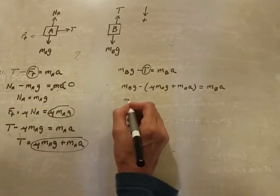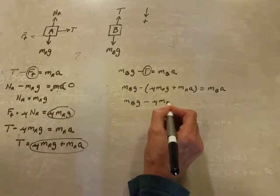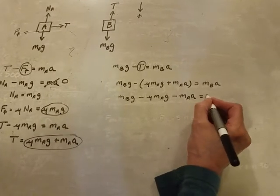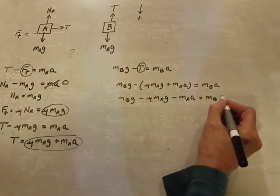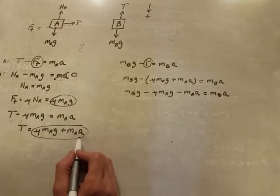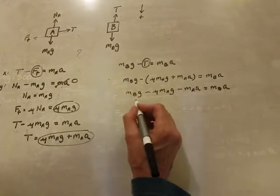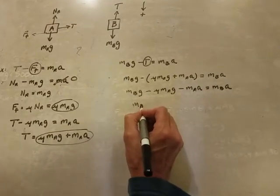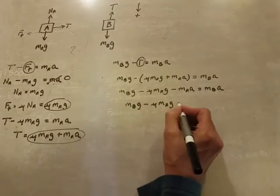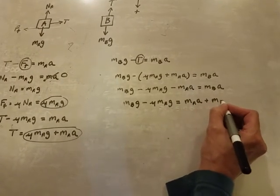Distribute that through. I need to solve for A. I need to get A before I can get tension and before I can do part 2, which is the speed from rest. In order to get A, I need to get all the A things on the same side and all the not A things on the other side. So this is equal to MAA plus MBA, and then I can factor.